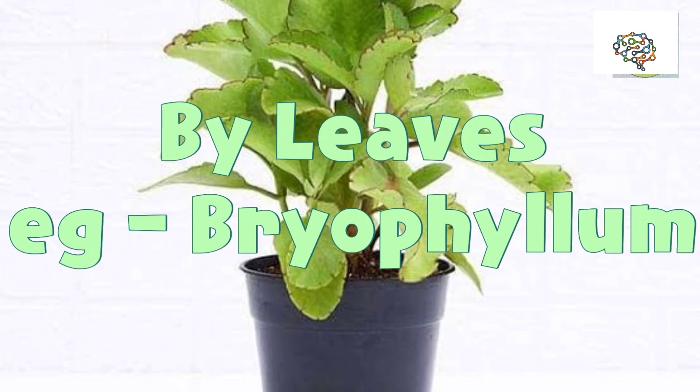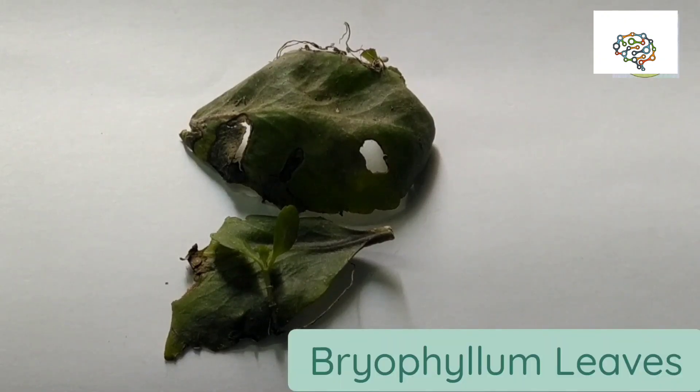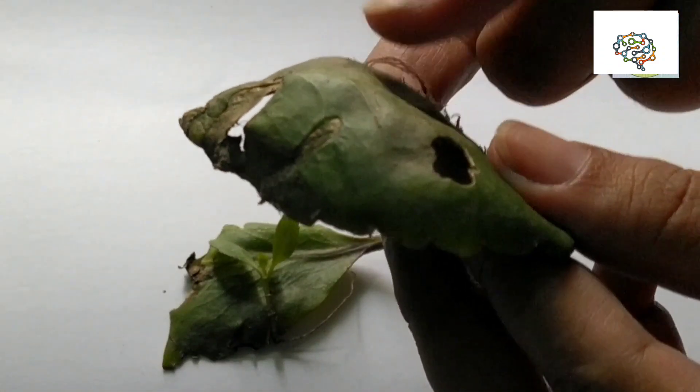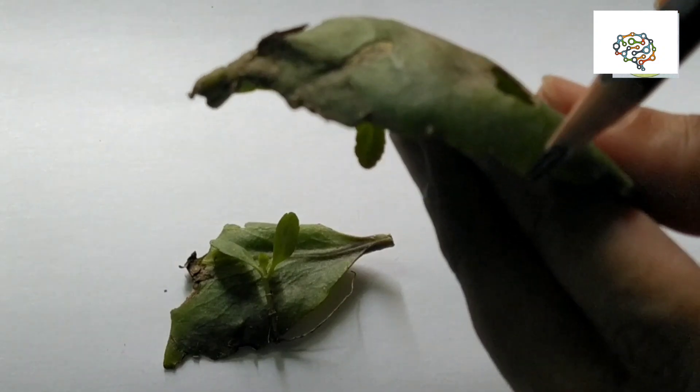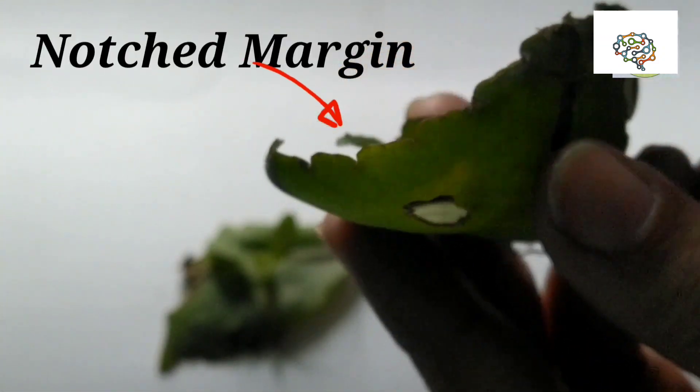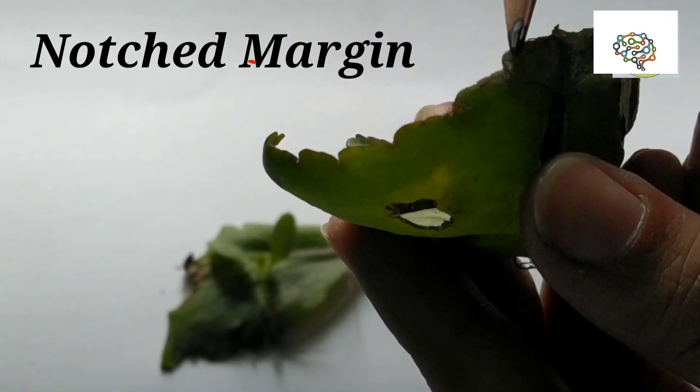In Bryophyllum, I have taken leaves of Bryophyllum. Now I am going to show you how it looks. First, we will see its margin. You can see the margin of Bryophyllum leaves is curved, and this curved margin is known as notched margin.